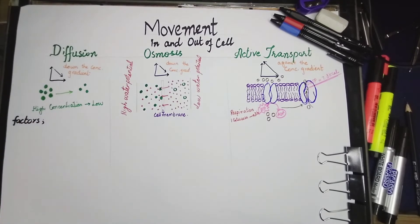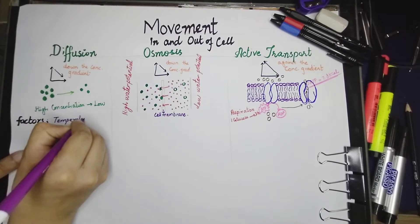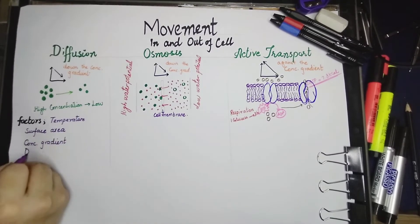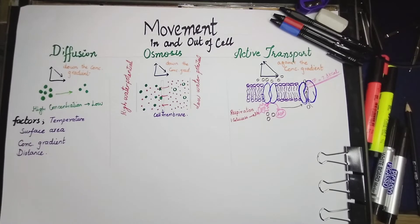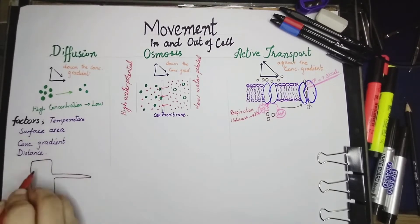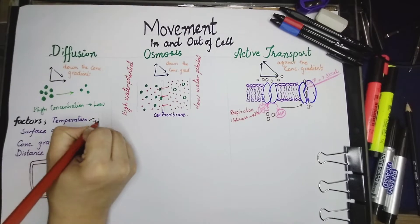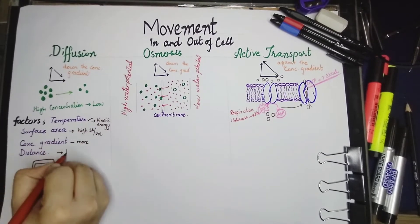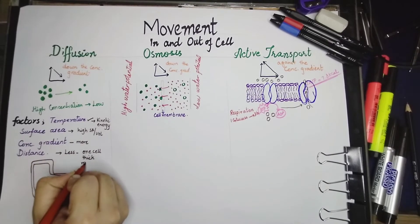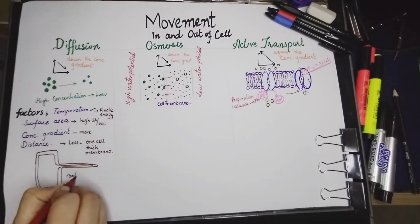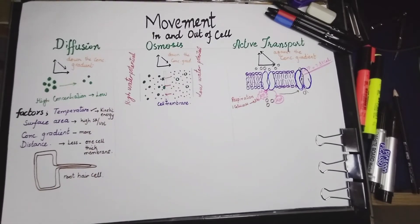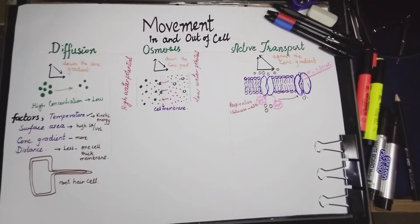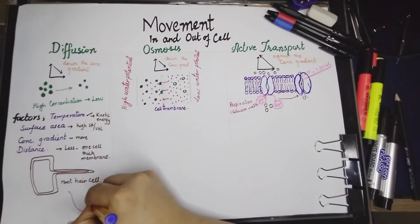Let's talk about the factors that affect diffusion. The first factor is temperature. When we increase the temperature, there will be more diffusion. When we increase the surface area, there will be effective diffusion and then distance. For example, let me explain it with the help of this root hair cell. You can see that the surface area of the root hair cell is more, so there is effective diffusion that takes place. The distance of the outside and inside the cell is very less because it is surrounded by one cell thick membrane. So it allows again effective diffusion.